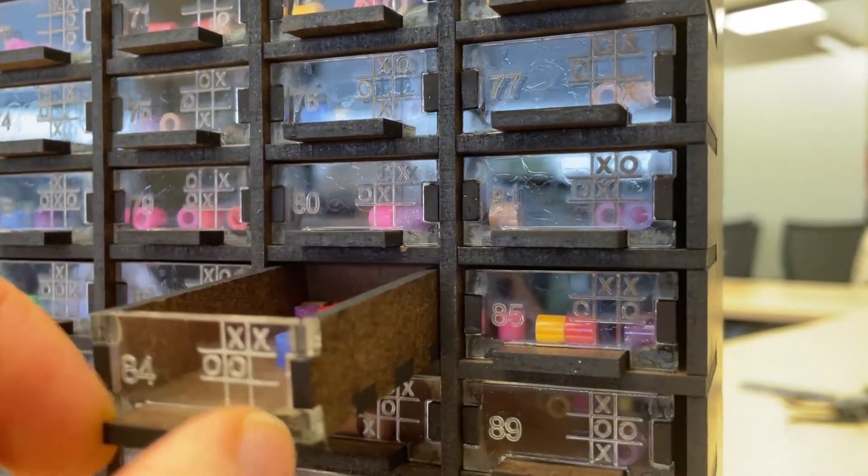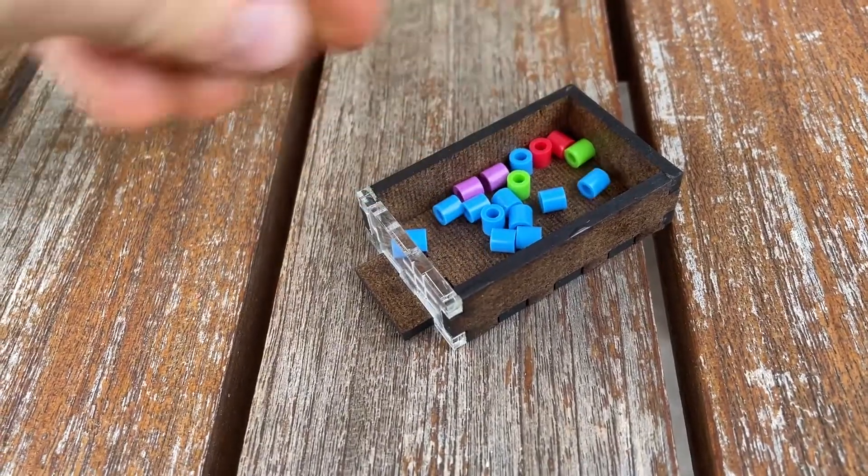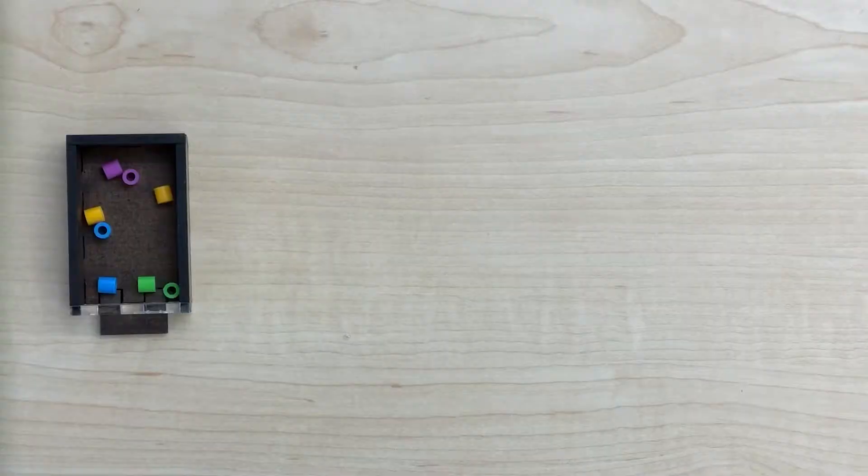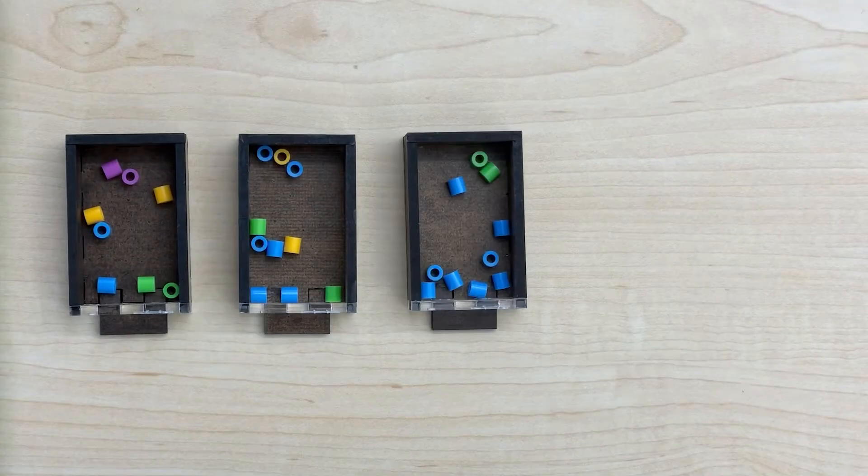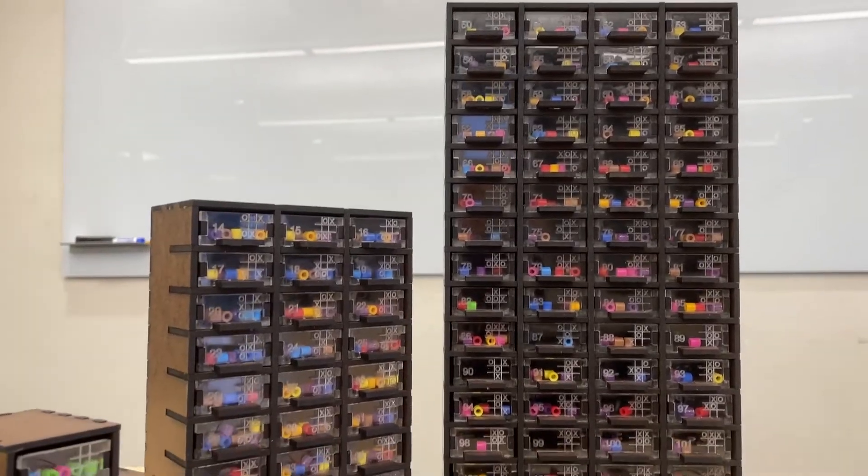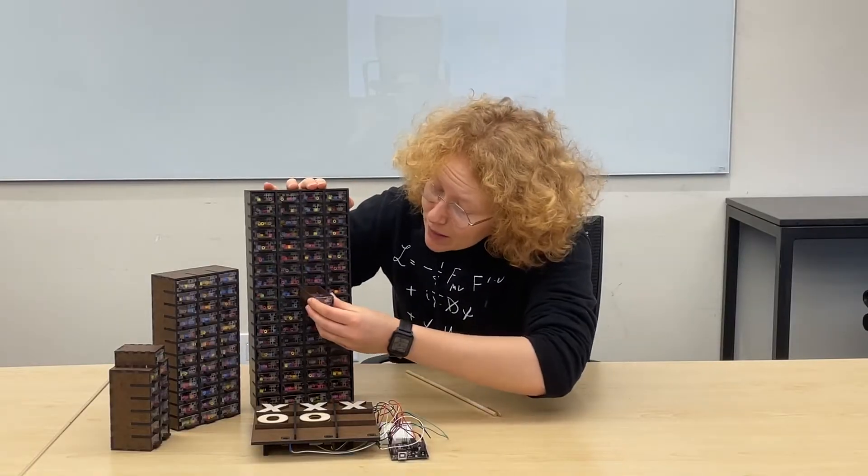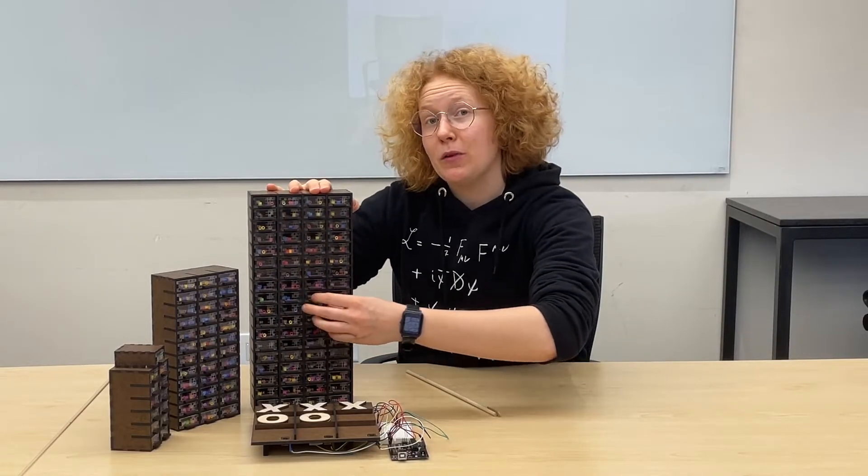Since this bead resulted in a good move in this scenario, we can add more beads of that color to reinforce the good behavior and make the mechanical computer more likely to make that move in the future. Similarly, if it makes losing moves, we can remove those beads to make them less likely. And because different board scenarios require different moves, we need a separate box for each possible scenario.